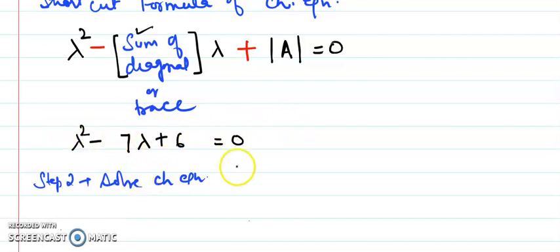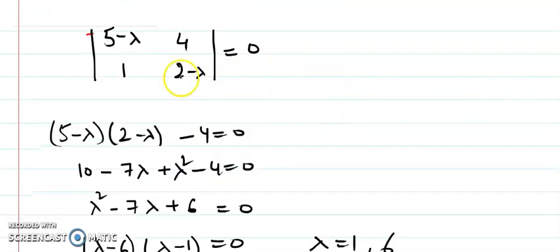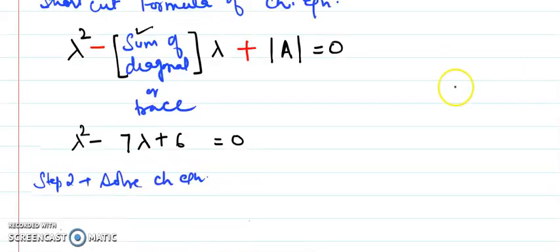Now we got the direct expression. Next step, even if you do not have to solve like that, then what will be the scenario, you have to open the determinant like this, this into this minus 4, simplify and then get the answer.